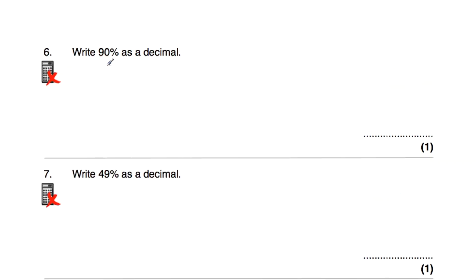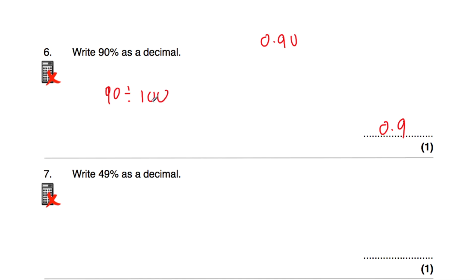Question number six is to write 90% as a decimal. 90% as a decimal will be 0.9 — it's quite useful to know that off by heart. Some people may write 0.90, but we don't need the zero on the end, so it would just be 0.9. Alternatively, take the 90 and divide by 100, moving the digits two columns to the right. The 9 in the tens moves into the units and then into the tenths, so the answer is 0.9.